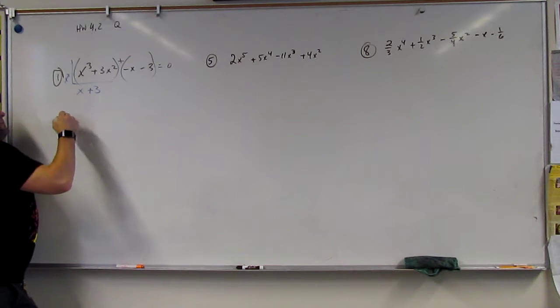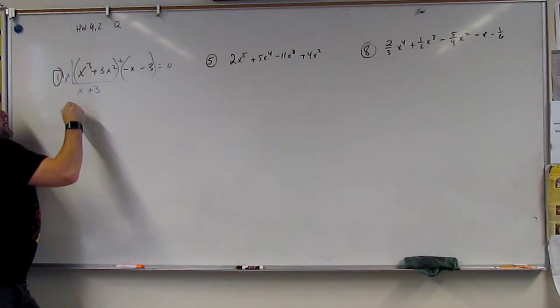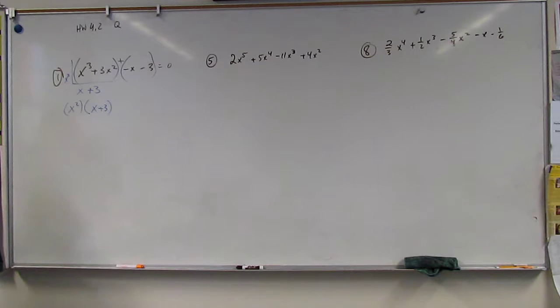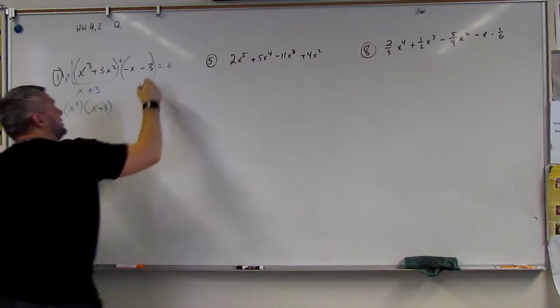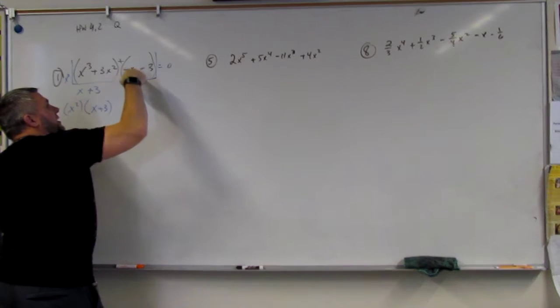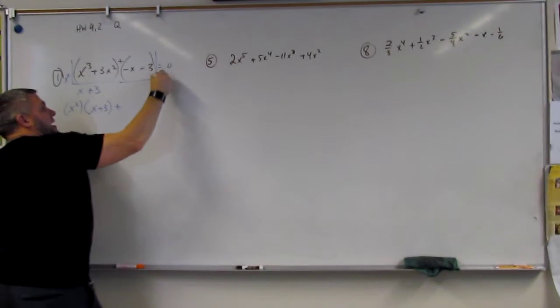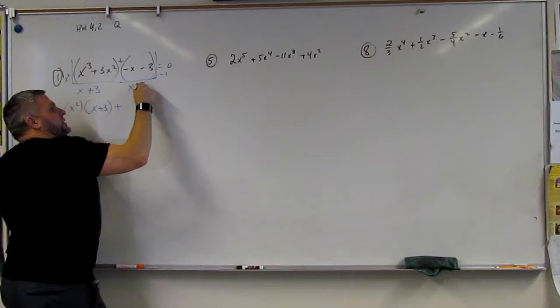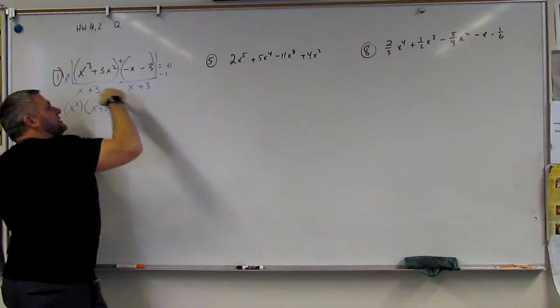All right. So we have our pieces here. X squared times X plus 3. And then we're going to do the other side and say, well, what is common here? Negative 1. And so what's left is X plus 3. And that's the key.